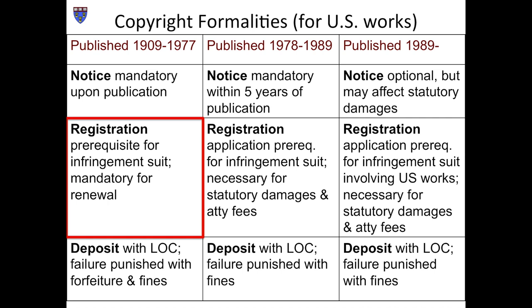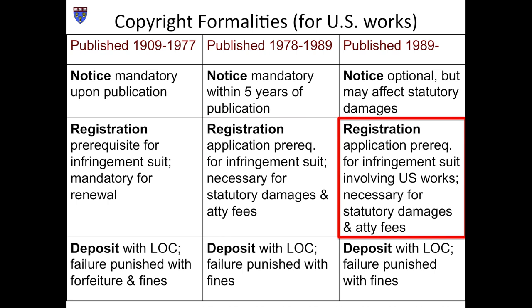The second of the three formalities is also illustrated by the King case. Registering your work with the Copyright Office was not a prerequisite to copyright protection, but you could not bring an infringement suit prior to registration, nor could you renew the copyright. That's the reason King sought and obtained registration before filing his initial suit. In 1978, the renewal system disappeared, but registration remained necessary if you wanted to bring a lawsuit. An additional incentive for registration was added: you couldn't recover statutory damages or attorney's fees for infringements that began prior to registration. In 1989, registration ceased to be a precondition for initiating a lawsuit with respect to works first published outside the United States, but it still remained so for U.S. works.